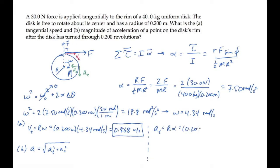A sub T, the tangential component, is R times alpha. Substitute values and calculate to see that it equals 1.50 meters per second squared.